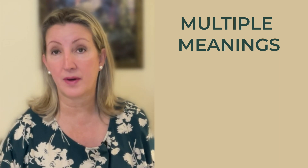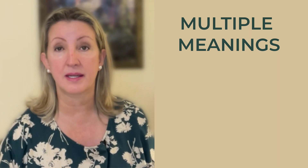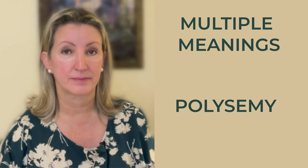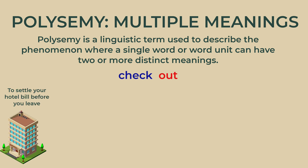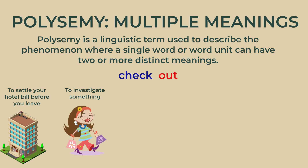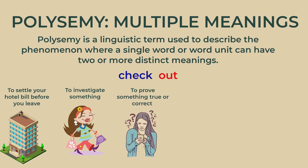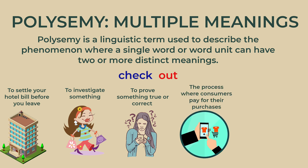In addition to being idiomatic, the same phrasal verb can have multiple meanings. This means they exhibit polysemy, like in these examples. Many phrasal verbs have multiple meanings, like 'check out,' which can mean to settle your hotel bill before you leave. Or it can also mean to investigate something — check out the new mall. Or it could mean to prove something true or correct — your story does not check out. When you go to the supermarket, the cashier will check out your merchandise. You can also check out books from the library.